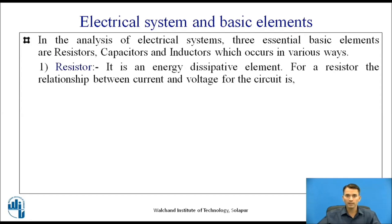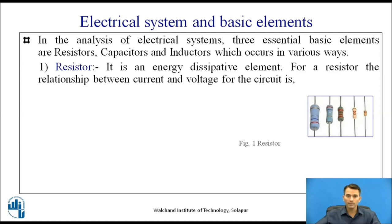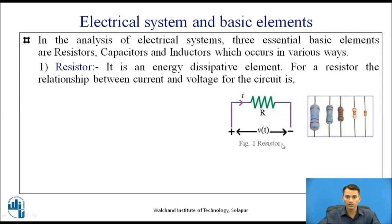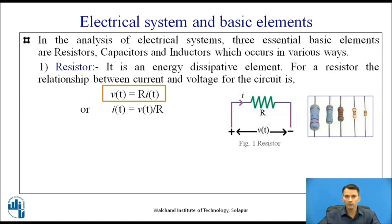The first and most basic element is the resistor, which is an energy dissipative element. For a resistor, the relation between current and voltage is given by V(t) = R × I(t), where voltage V(t) is applied across the resistor R and current I flows through it. The same equation can be written in terms of current as I(t) = V(t) / R.